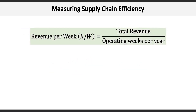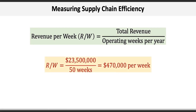Next is revenue per week, and that's total revenue divided by the operating weeks per year. Total revenue is $23,500,000 divided by 50 weeks, giving $470,000 per week. We needed the revenue per week in order to calculate the accounts receivable week supply and the accounts payable week supply.